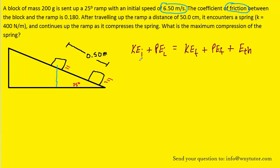What we'll do next is note that initially there is no potential energy because the box is starting at ground level. So we can actually remove this from the equation.